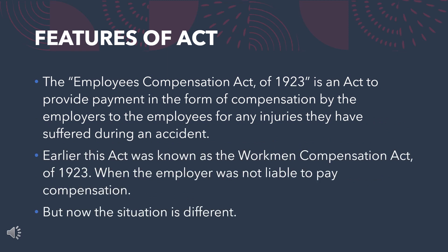Now let's see the features of the act. The Employees Compensation Act of 1923 is an act to provide payment in the form of compensation by the employers to the employees for any injuries they have suffered during an accident. Earlier, this act was known as the Workman Compensation Act of 1923 when the employer was not liable to pay compensation, but now the situation is different.